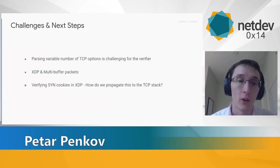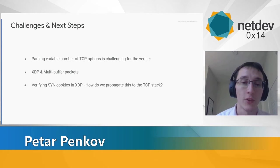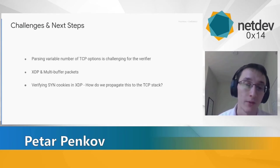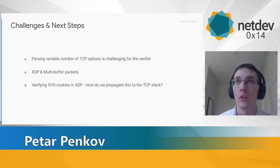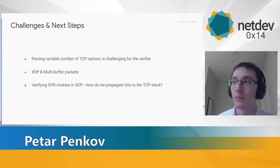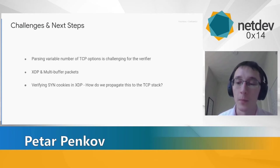Closing with challenges: the first was parsing TCP options for incoming packets. Because TCP options have an inherently variable offset and variable number, it was very hard to convince the BPF verifier that our accesses to options are valid. We worked around this by using a switch statement over a fixed number of options. As performance results showed, this didn't hurt performance too badly, but we could improve it further with something smarter in the verifier.